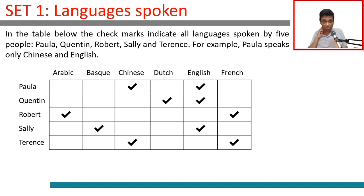Languages are labeled A through F, standing for Arabic, Basque, Chinese, Dutch, English, and French.